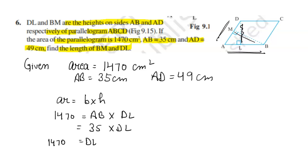To find the value, divide 1470 by 35. So DL is equal to 42 cm.